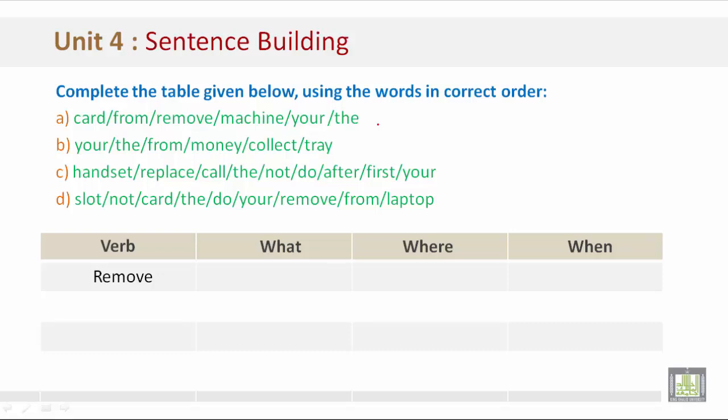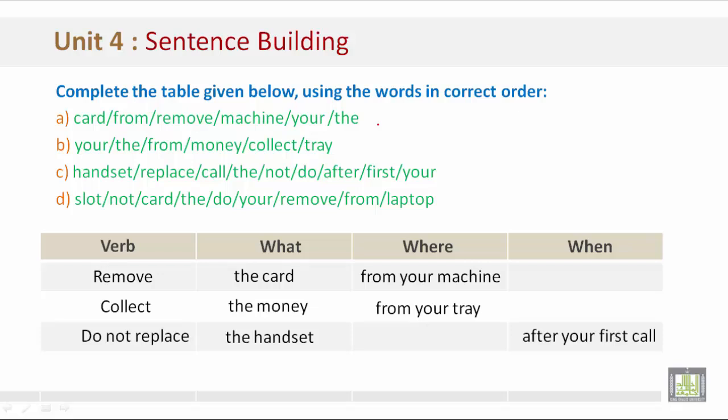In A we have remove the card from your machine. In B we have collect the money from your tray. And in C we have do not replace the handset after your first call. Notice this is in the when category. And we have do not remove your slot card from the laptop. This is example D.